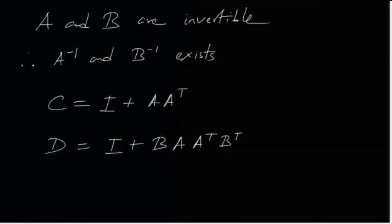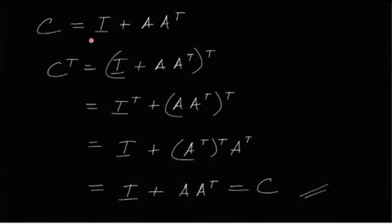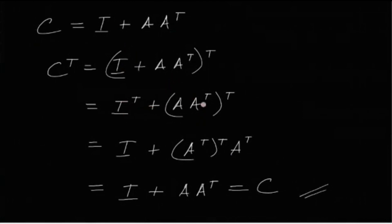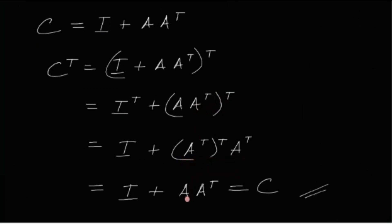For options C and D, we check whether C and D are symmetric. C = I + AA^T. Taking the transpose: C^T = I^T + (AA^T)^T = I + (A^T)^T·A^T = I + AA^T = C. So C^T = C, meaning C is symmetric, and option C is true.